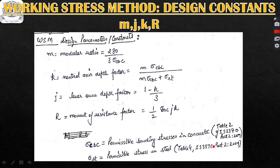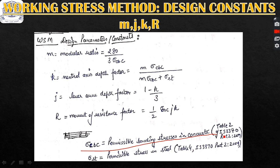For design using working stress method, we require four design constants: M, K, J, and R. M is the modular ratio given by 280 divided by 3 times sigma_cbc, where sigma_cbc is the permissible bending stress in concrete. This value is obtained from Table 2 of IS 3370 Part 2.